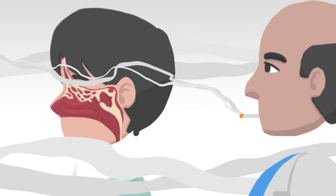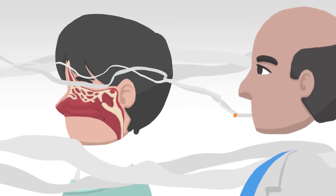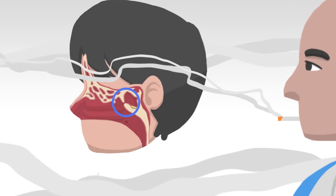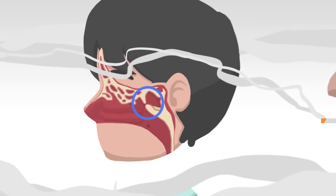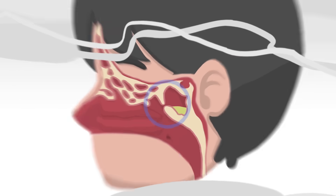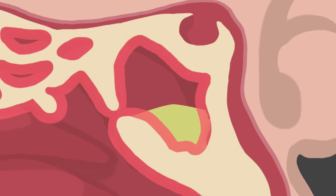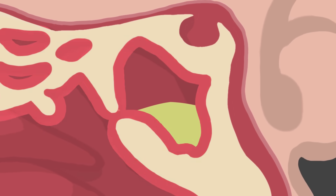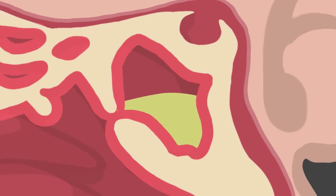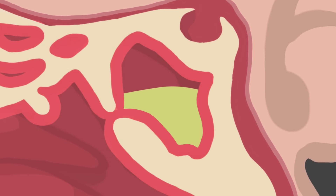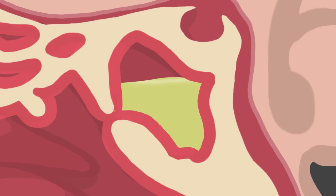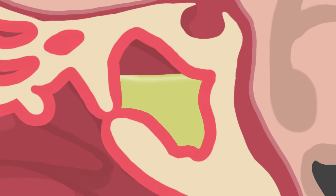Exposure to smoke or cigarette smoking, and anatomical abnormalities, which make it difficult for sinuses to drain, are also predisposing factors. The central event in sinusitis is blockage of the sinus openings, or ostia, as a result of inflammation.